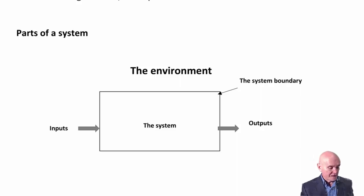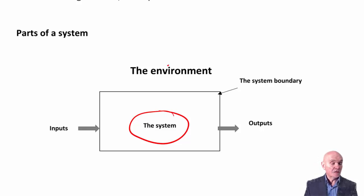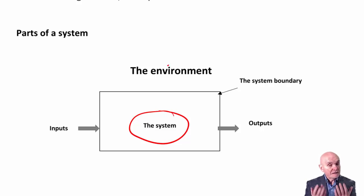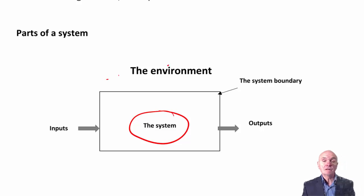You have the system itself, for example the organisation. And then you have its environment. The environment of a business is the national environment, the international environment, the competition, the legislation in which the business actually operates. In the environment, there are your customers, there may be shareholders, the government — many of the external stakeholders are forming part of the environment.